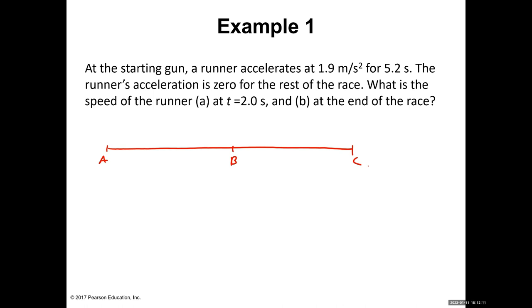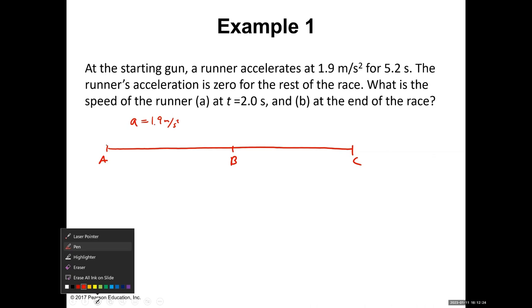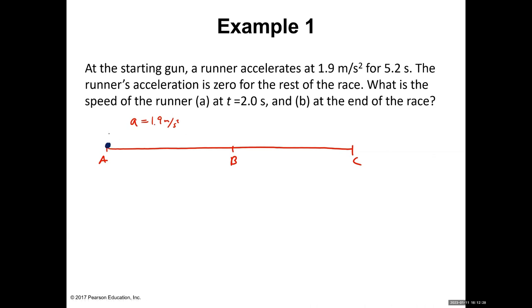From A to B there is acceleration equal to 1.9 meters per second squared. The runner accelerates from A to B — velocity at A is zero because it starts from rest at the starting gun. From B to C there is no acceleration, so for the second segment acceleration is zero, and the runner moves at constant velocity from B to C.